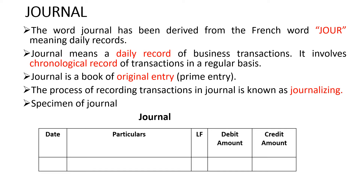The process of recording transactions in a journal is known as journalizing. It involves passing journal entries which affect at least two accounts. One account is debited and another account is credited. The amount in the debit column should be equal to the credit column.